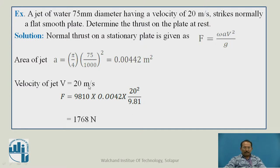Velocity of jet is given as 20 meter per second. Put this value: F equals 9810 times 0.00442 times 20² divided by 9.81. We get 1768 Newton force, or you can say thrust, on the plate which is at rest.